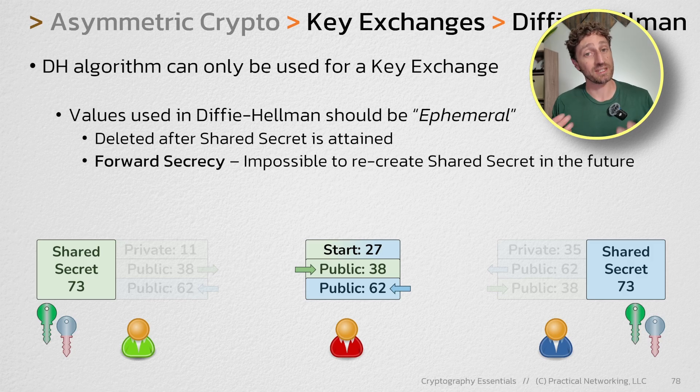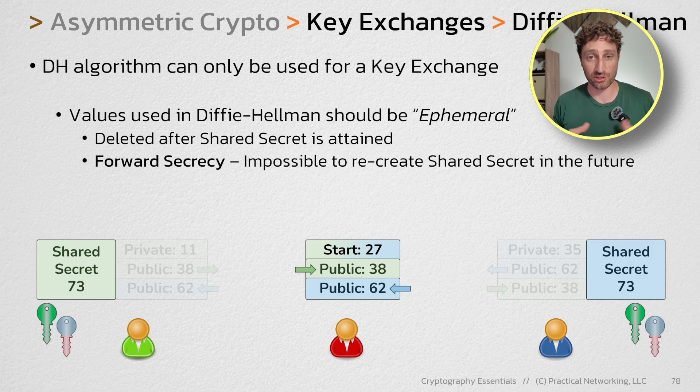You don't have that with Diffie-Hellman so long as you're doing it with ephemeral values. Since these values literally no longer exist after the calculation is done, it is now impossible to recalculate the shared secret. All you can do is brute force that secret. Forward secrecy is the reason that Diffie-Hellman is regarded as more secure than RSA as a key exchange, and it is the reason why Diffie-Hellman is highly recommended in all secure communication protocols like SSL and TLS.